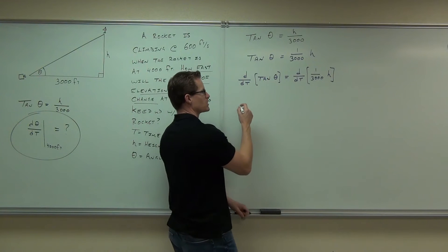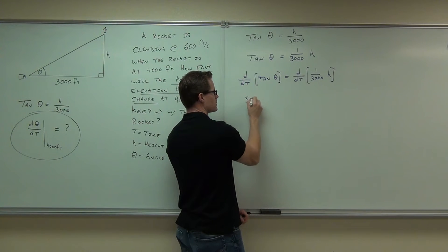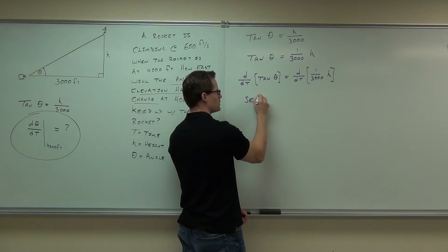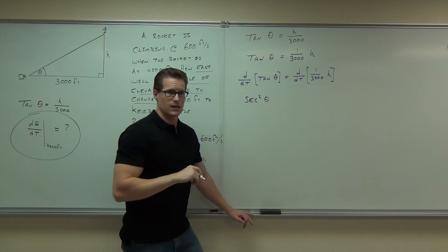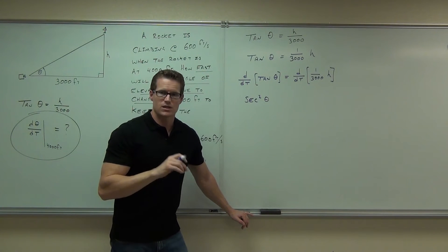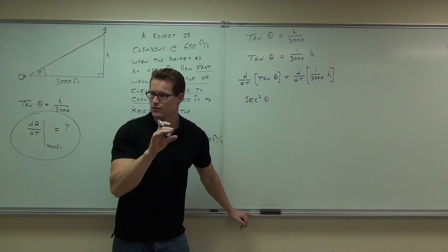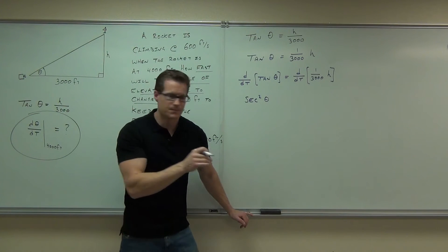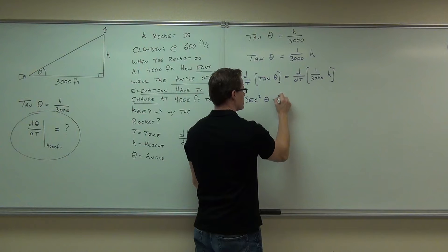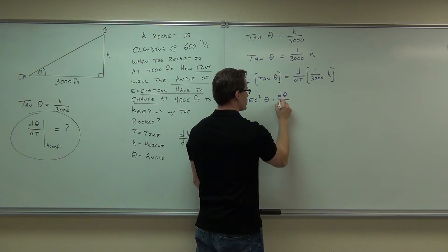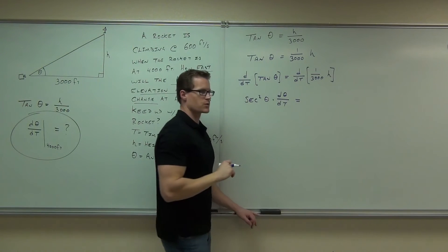So the derivative of tangent is what? Secant squared theta. And then, is that it? No, because you touched the theta with a derivative, you have to have d theta dt. So far, so good?